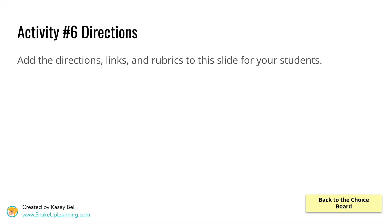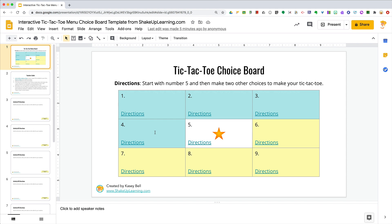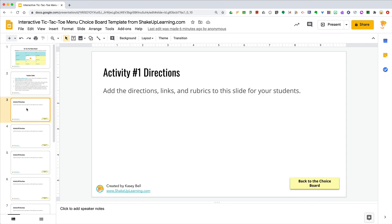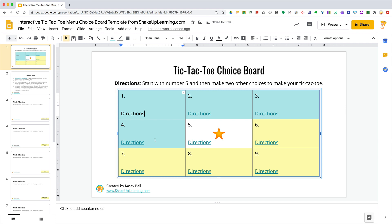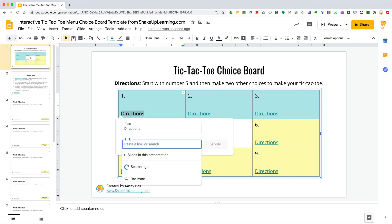First things first: you need to create all of your slides so that you have something to link to. I have my main choice board and all the slides for each numbered choice. This is what I call internal linking. Highlight the object or the words, then insert a link — use Ctrl or Command+K on the keyboard, or go to your toolbar.